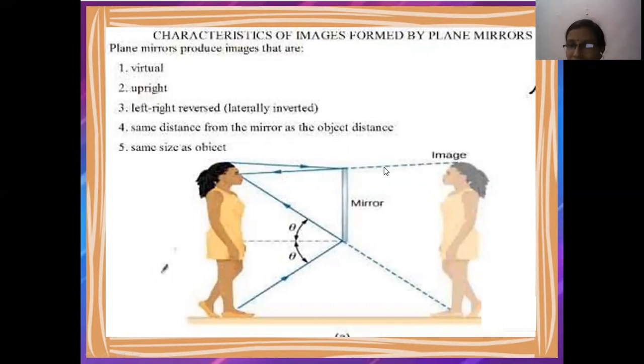Next, upright. The image is straight as it is. Next thing, left-right reversed. The left portion is shown as right part. When you are standing with your right hand, you will see that it appears as left hand. If you look at the front side, it's a left-right reversal.